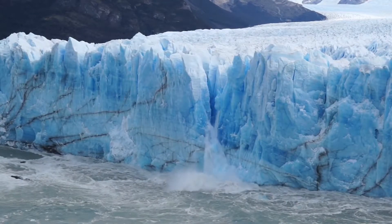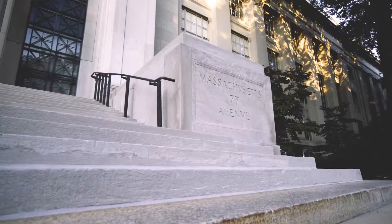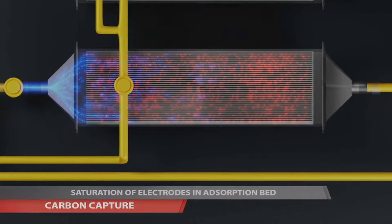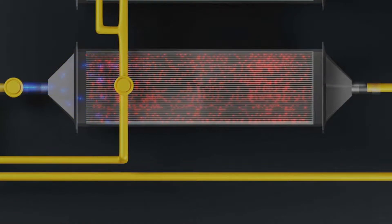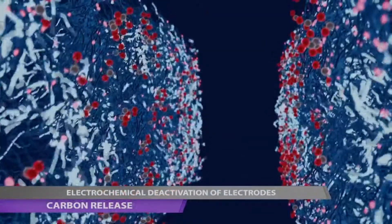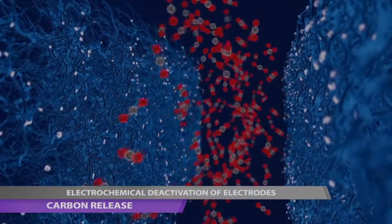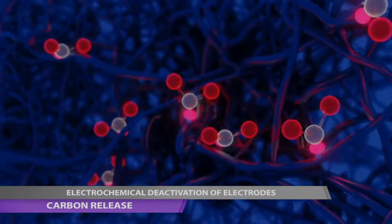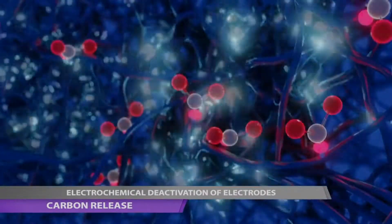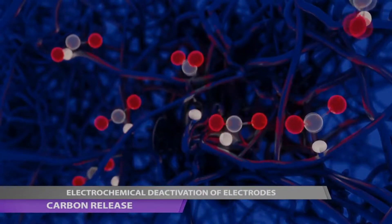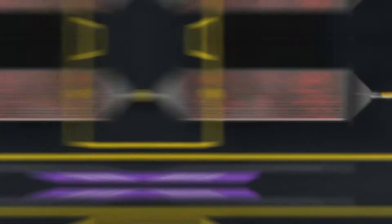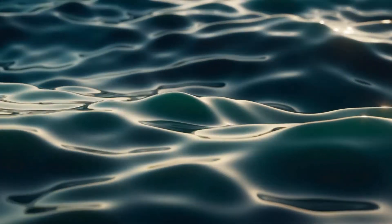Nanotechnology could bring an end to climate change. In 2019, MIT engineers constructed a system of nanotechnology that could remove CO2 from the air. Electrical plates lined with nanotubes effectively collect CO2 particles while the rest of the air passes right through them; once the electricity is discharged, the CO2 is collected and disposed of. This process is incredibly efficient and consumes very little energy. Nanotechnology can also be used to purify the water we drink through similar methods.